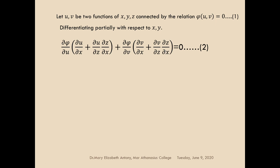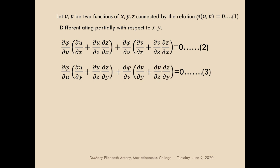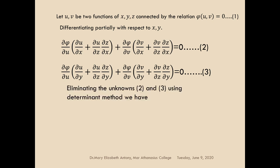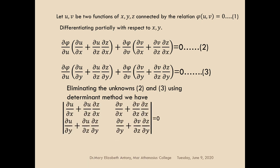We get a similar result when we differentiate partially with respect to y. Now, we have to eliminate the arbitrary function phi. We don't need dou phi by dou u and dou phi by dou v in these two equations. For that, we use the technique involved in simultaneous equations — multiplying the equations by the appropriate coefficients, which is generally known as the determinant method.